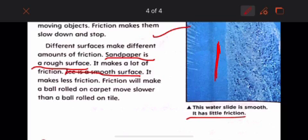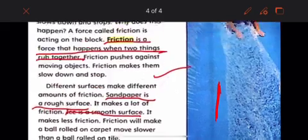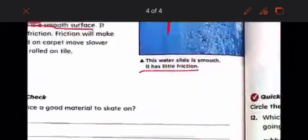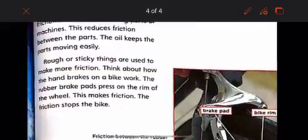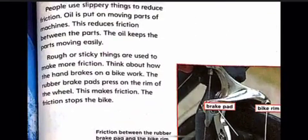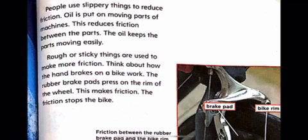Sandpaper is rough surface. It makes a lot of friction. Friction will make a ball rolled on a carpet move slower than a ball rolled on a tile. So friction. People use slippery things to reduce friction. Oil is put on moving parts of machines. This reduces friction between the parts. The oil keeps parts moving easily.